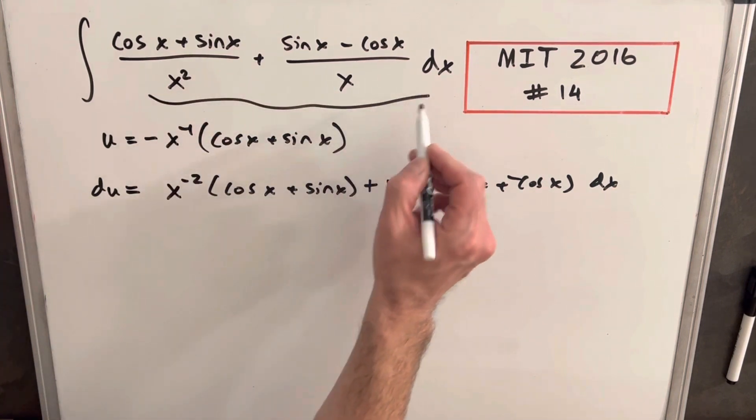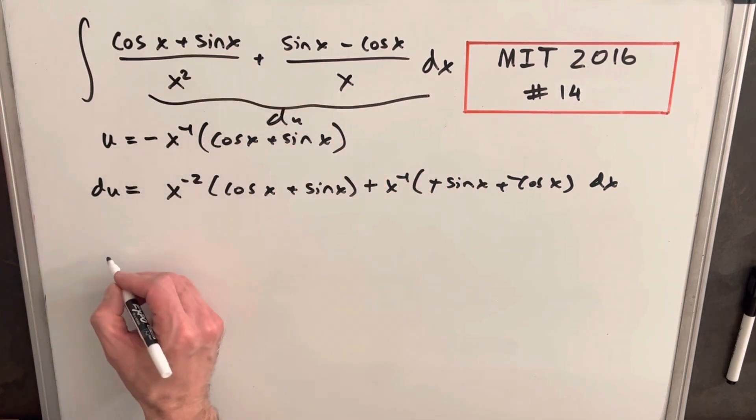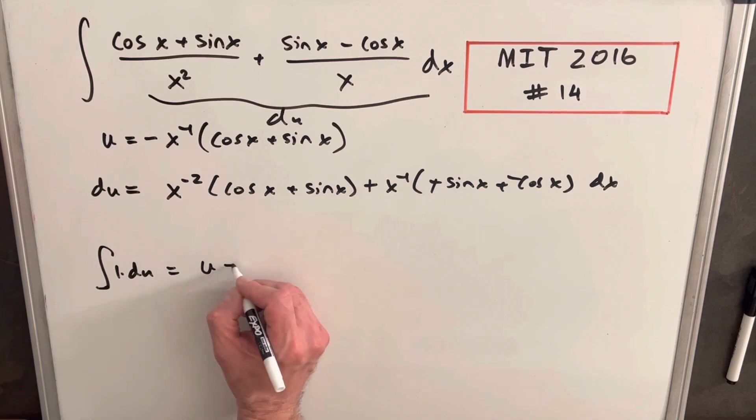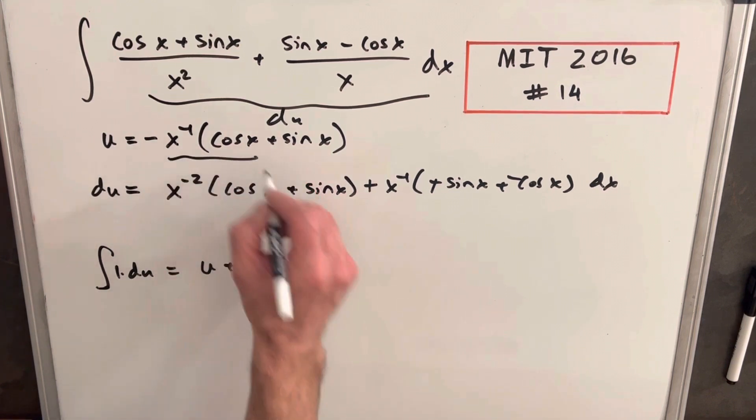So what we have here is our whole expression is du. We're just integrating du, or 1 du. And what we're going to get is u plus c. Our final answer is just going to be this.